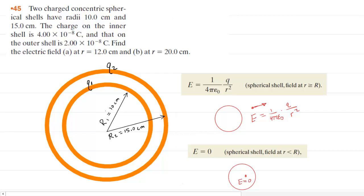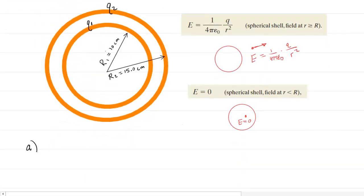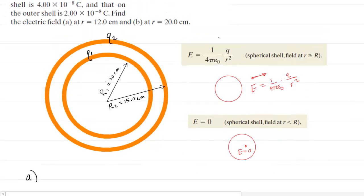Keep those in mind as we look at part A. In part A we are asked to calculate an electric field at a distance of 12 centimeters. We should notice that 12 centimeters lies outside of the first shell but it lies inside of the second shell.